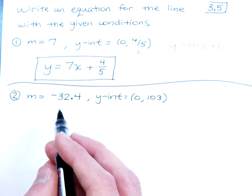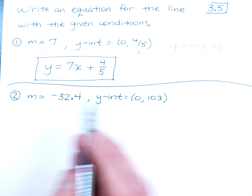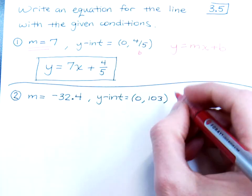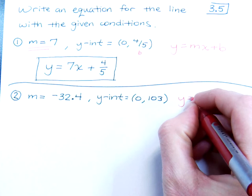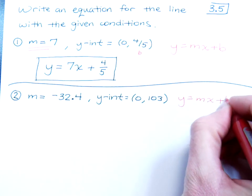Again, I'm giving you the slope, I'm giving you the y-intercept, so we should be able to go back and use the slope-intercept form, y equals mx plus b.